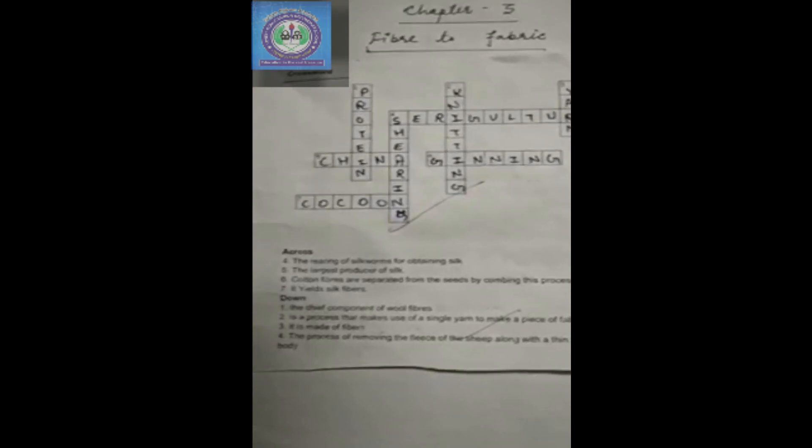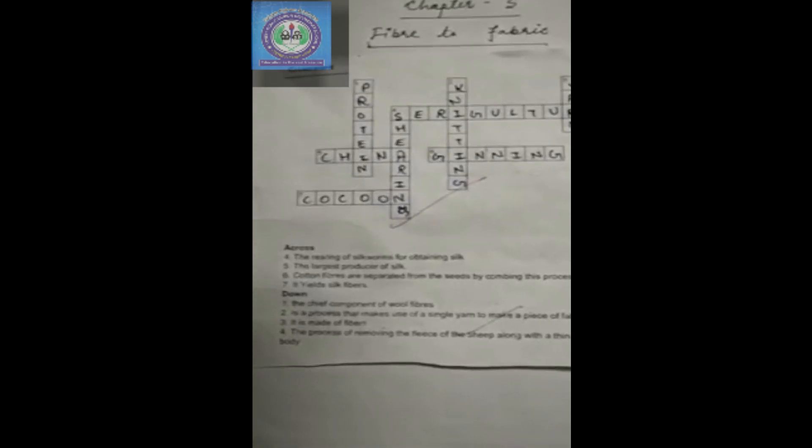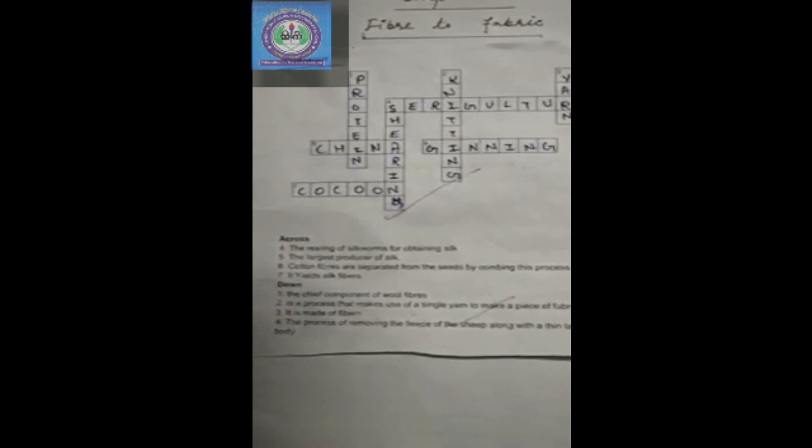The chief component of wool fibres? Answer is protein. It is a process that makes use of a single yarn to make a piece of fabric. The answer is knitting.